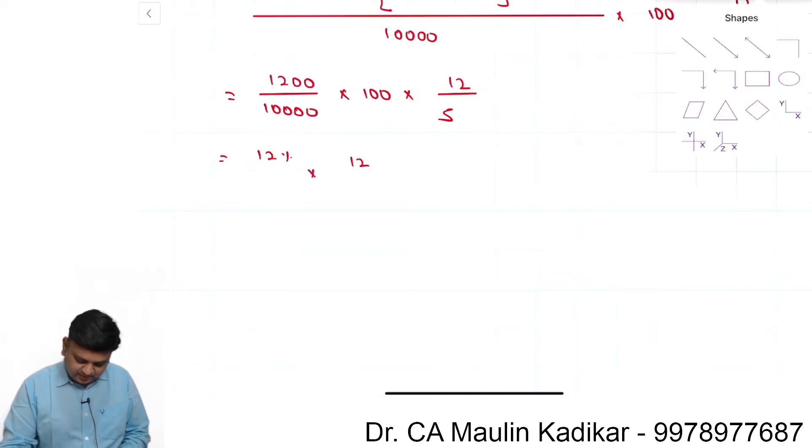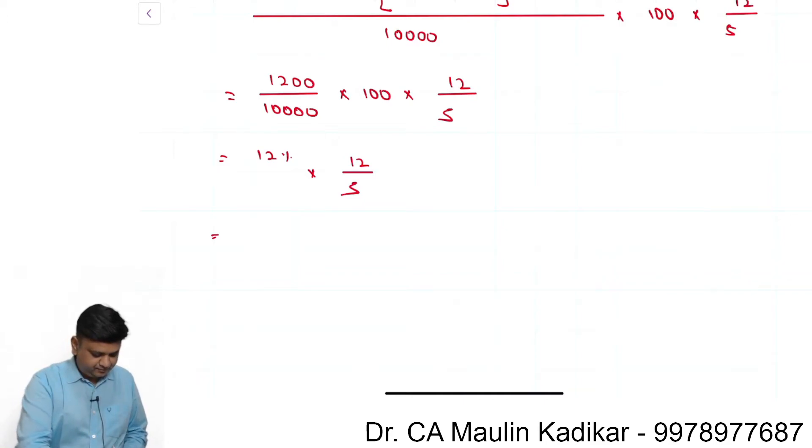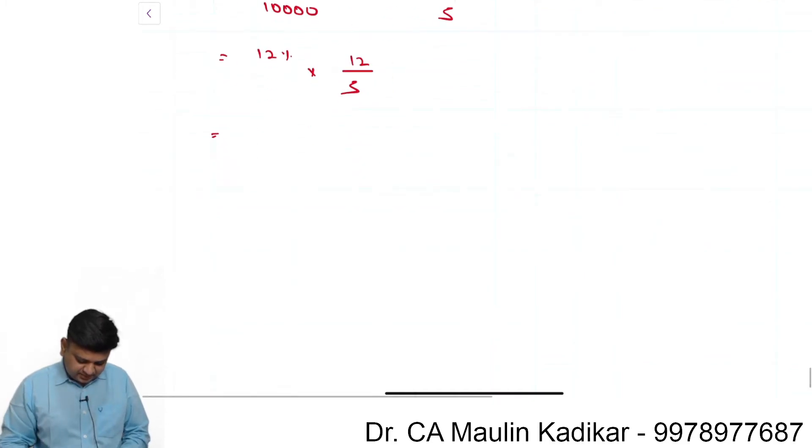So 12 percent into 12 divided by 5 comes to 28.8 percentage.